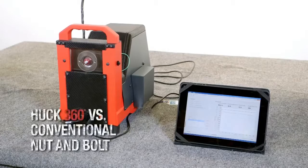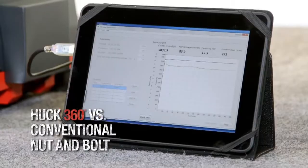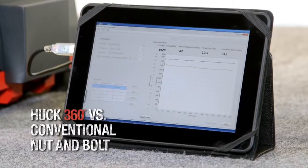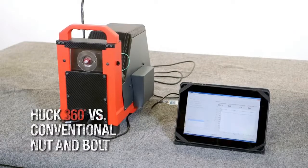Another huck fastener delivering superior clamp retention and vibration resistance, the huck 360 was specially designed for applications where vibration resistance is critical, but conventional tooling is needed.